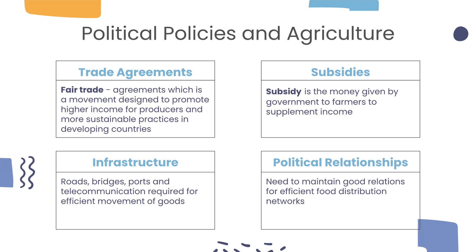What are some political policies relevant to agriculture? Recently, there has been a move towards Fair Trade Agreements, which is a movement designed to promote higher income for producers and more sustainable practices in developing countries. In addition, subsidies are given to farmers by governments — money given to supplement income. Oftentimes, the government gives money to farmers to produce more of an agricultural product, but as supply increases, it decreases the cost of the product, eventually leading to a decrease in farmers' profits. Another essential factor for agriculture is infrastructure, such as roads, bridges, ports, and telecommunication, which is required for efficient movement of goods.